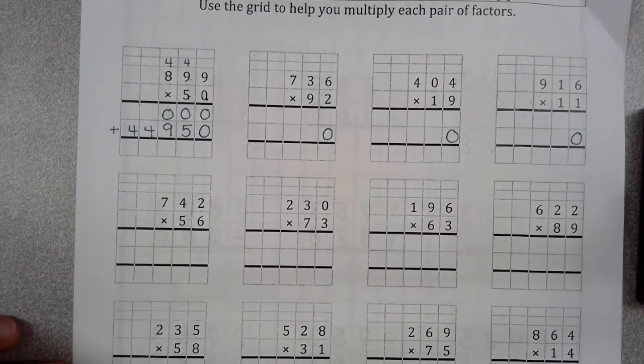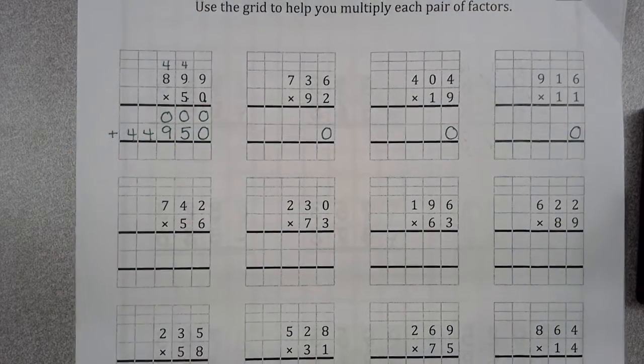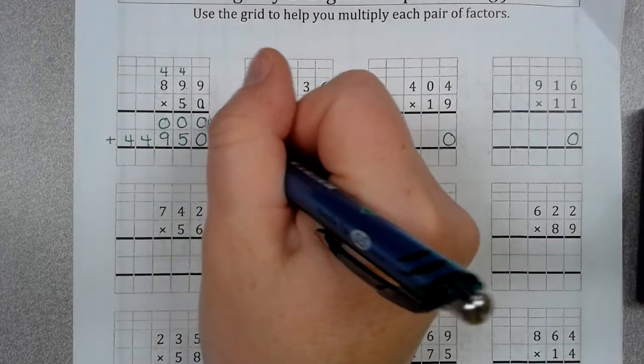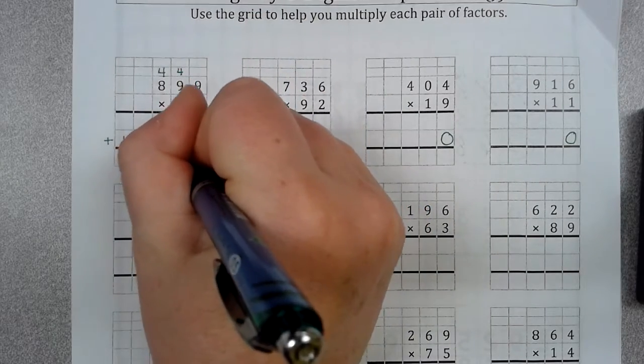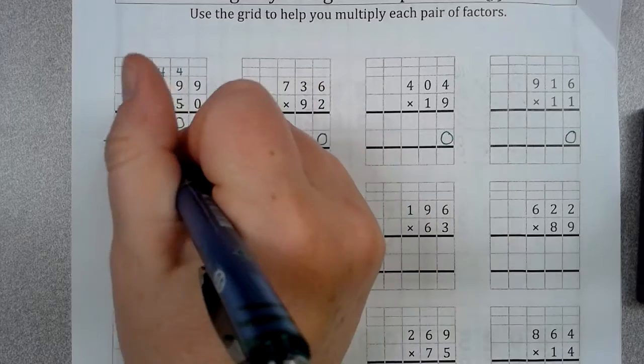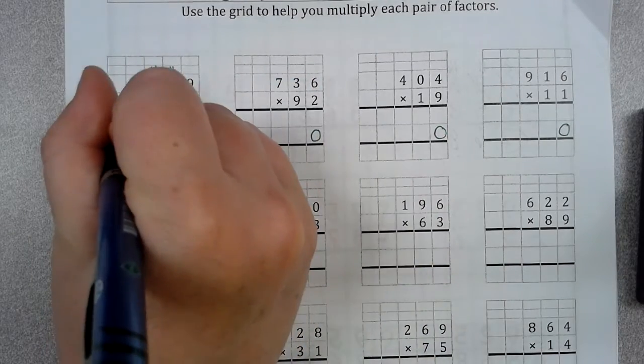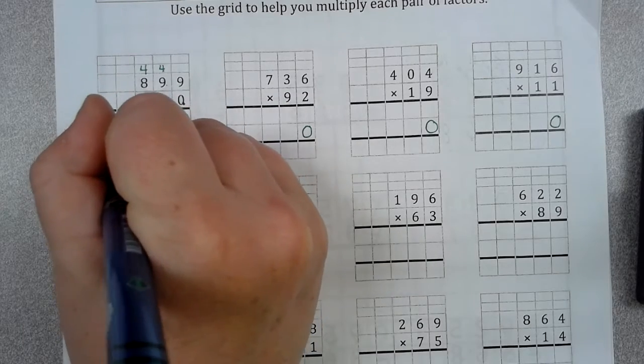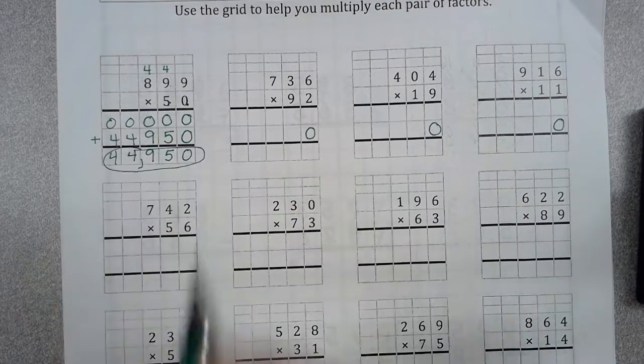Now, we add. This is why I like these grids. It just keeps everything nice and neat. 0 plus 0 is 0. 0 plus 5 is 5. 0 plus 9 is 9. And then 4. Remember these 0s. 4 and 0 is 4. And then 4. So, 44,950.